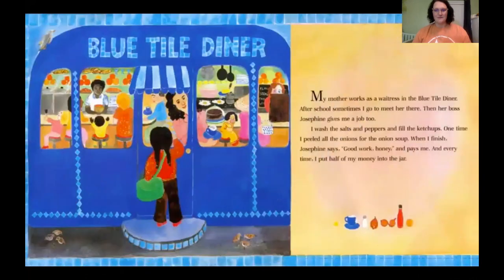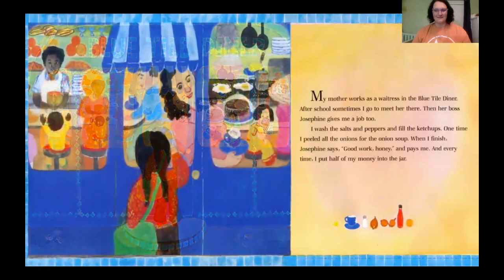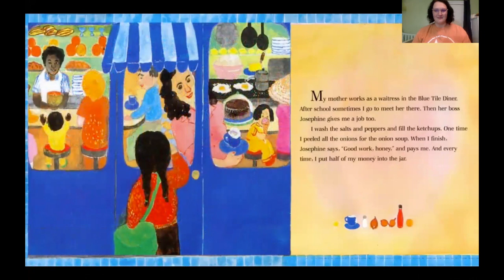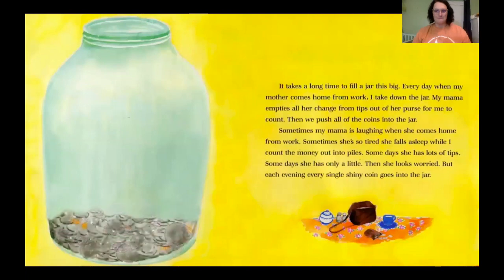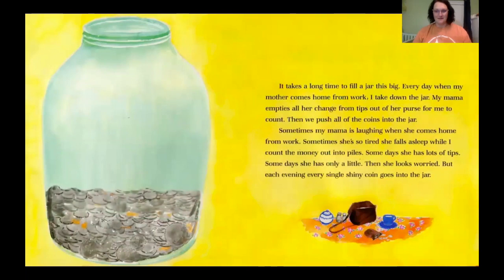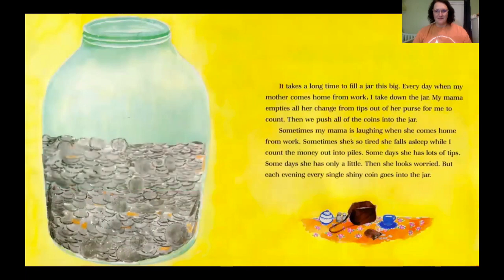My mother works as a waitress in the Blue Tile Diner. After school, sometimes I go to meet her there. Then her boss, Josephine, gives me a job too. I wash the salt and peppers and fill the ketchups. One time, I peeled all the onions for the onion soup. When I finish, Josephine says, 'Good work, honey,' and pays me. And every time, I put half of my money into the jar. It takes a long time to fill a jar this size. Every day when my mama comes home from work, I take down the jar. My mama empties all her change from tips out of her purse for me to count. Then we push all of the coins into the jar. Sometimes my mama is laughing when she comes home from work. Sometimes she's so tired she falls asleep while I count the money out into piles.